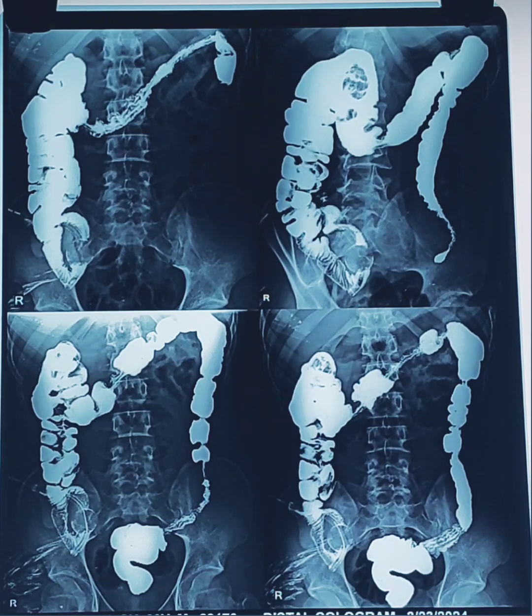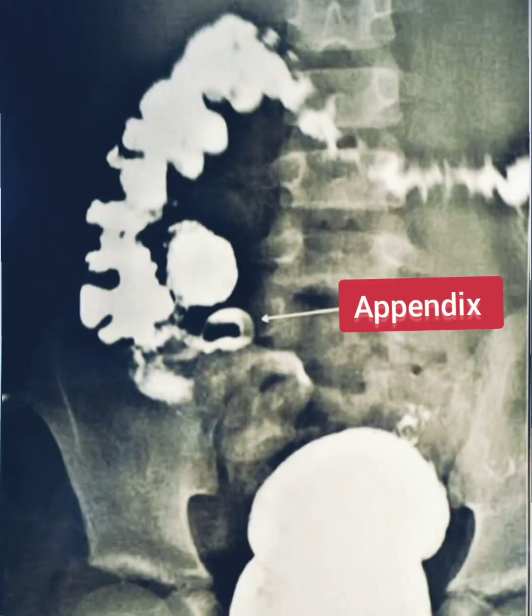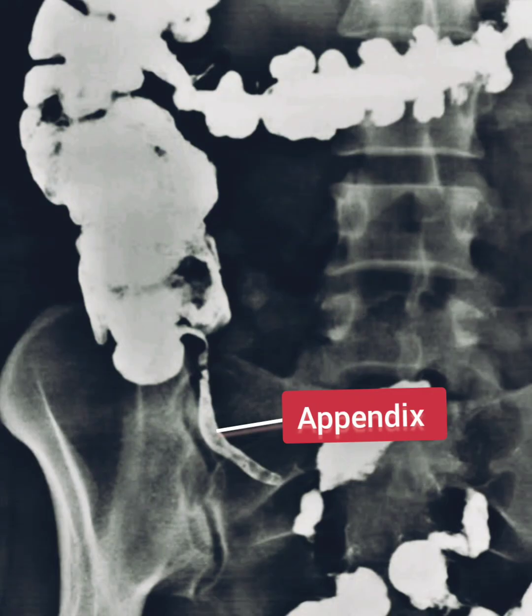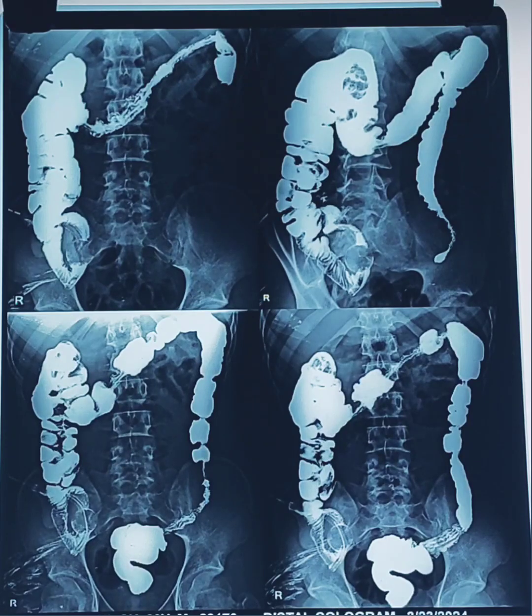The appendix appears as a very narrow radiopaque shadow. The length of the appendix is about 6 to 10 centimeters, though the length is very much variable.